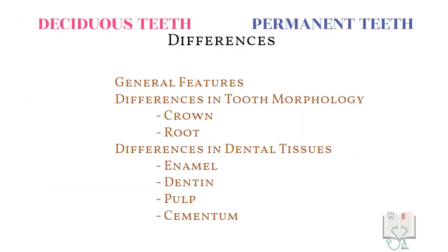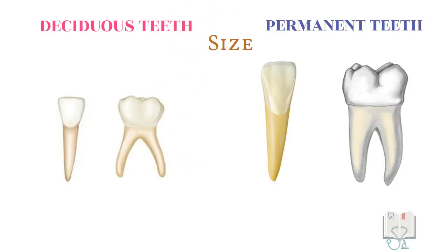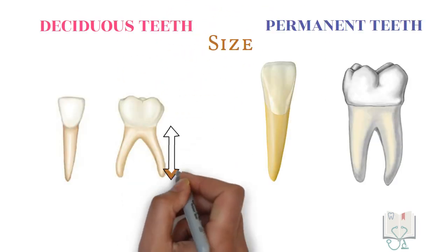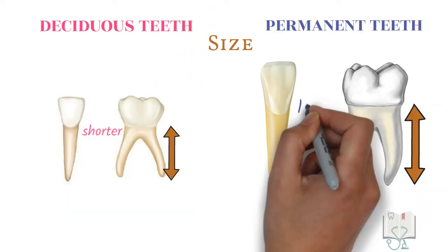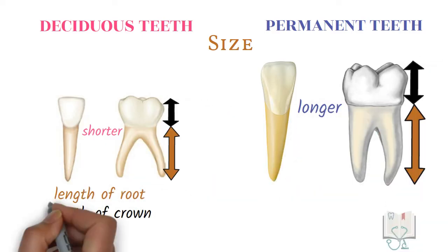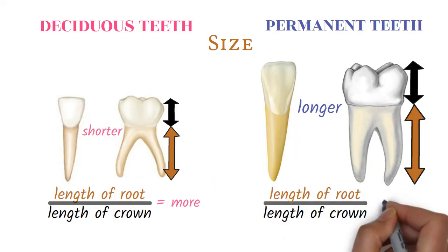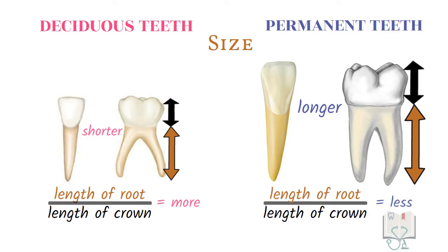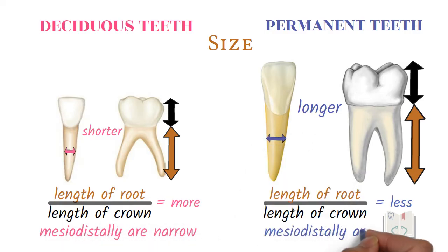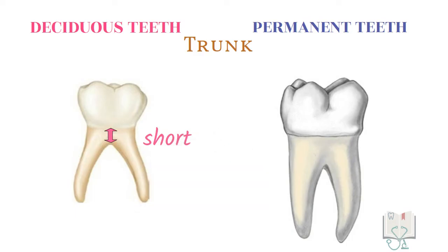Coming to the differences in the morphology of the root. In deciduous teeth, the roots are shorter than those in permanent teeth. However, in proportion to their crown length, the roots of deciduous teeth appear longer than the ratio seen in permanent teeth. The roots of deciduous teeth are slender whereas in permanent teeth they are broad. The roots in deciduous teeth have shorter trunks than those in permanent teeth.